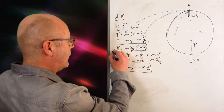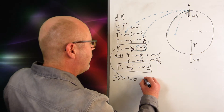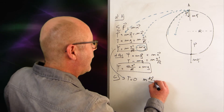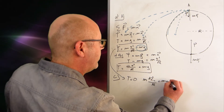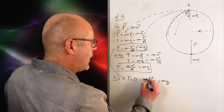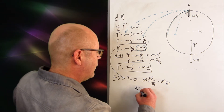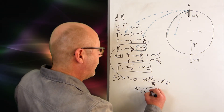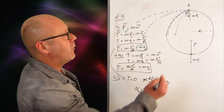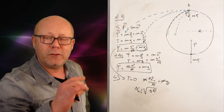The condition is tension T = 0, meaning only gravity provides the centripetal force. So: mv_min²/r = mg. Canceling the m's gives v_min = √(gr). That is the minimum speed for the object to maintain circular motion — i.e., for the string to stay straight.